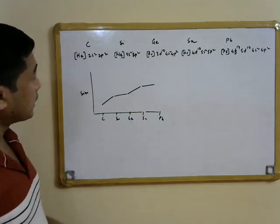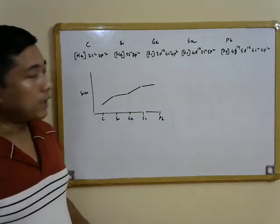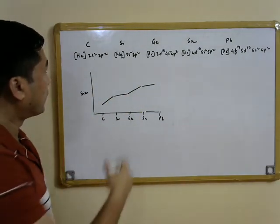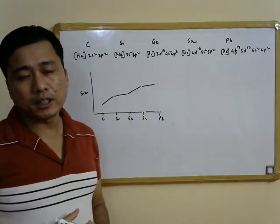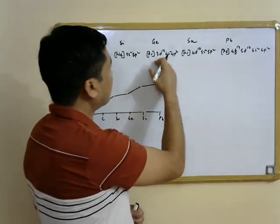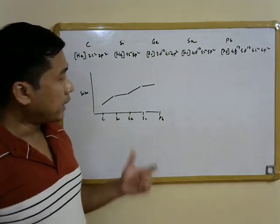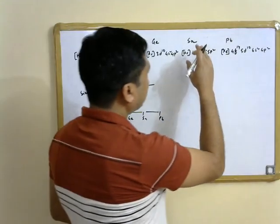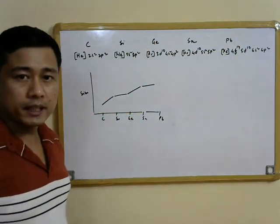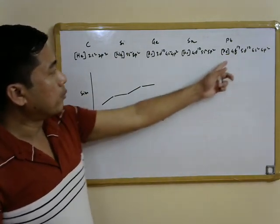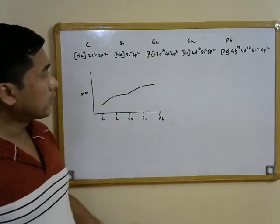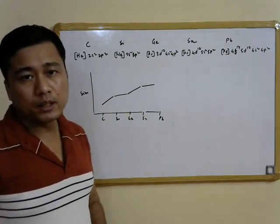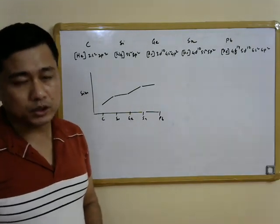Similarly, ionization energy is expected to decrease going down the group, but not very regularly. From carbon to silicon there is a substantial decrease, but from silicon to germanium the decrease is not very substantial. From germanium to tin there is a notable difference, while from tin to lead the decrease is again not very substantial due to lanthanide contraction. Periodic properties in group 14 are affected by both d-orbital and f-orbital contraction.